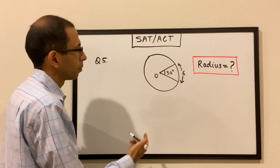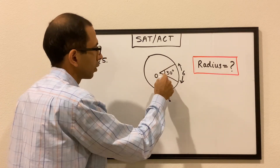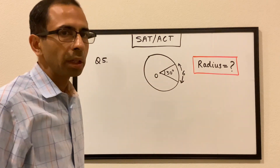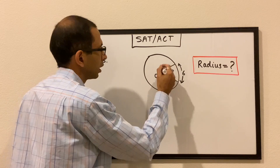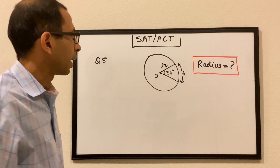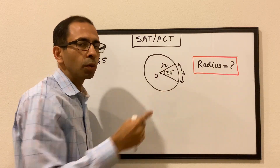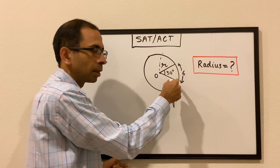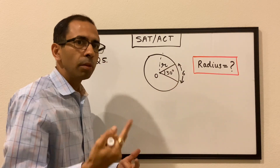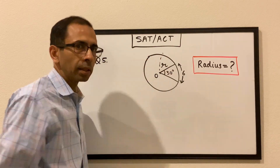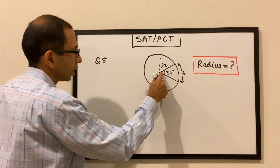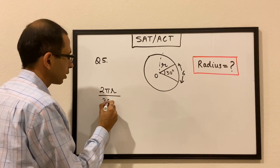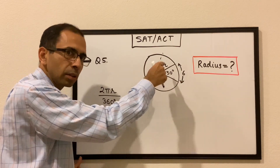Next question: we have a circle with center O and a small sector with a central angle of 30 degrees. The arc length of that sector is 6 units, and we have to find the radius of the circle. The arc length and the central angle go in the same proportion, so the ratio of arc length to central angle equals the ratio of circumference to total angle.